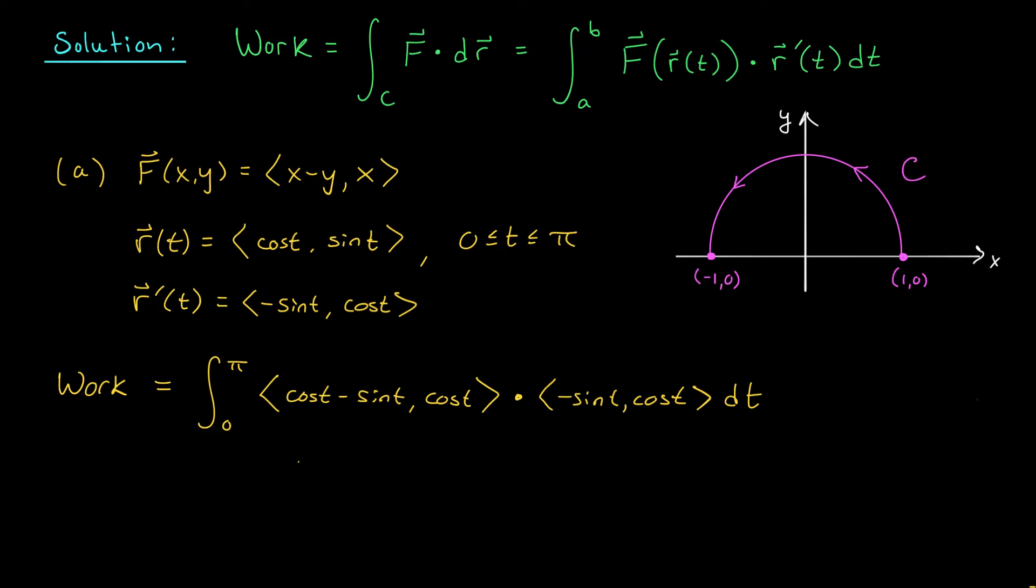Okay, to evaluate this integral, we should start by expanding this dot product. We get the integral from 0 to π, and we multiply our first entries to get -sin t·cos t, plus sin²t. And then we multiply our second entries. We add cos²t, dt.